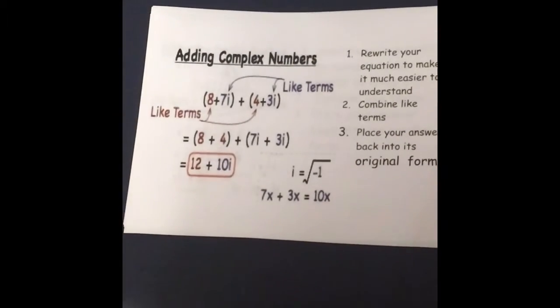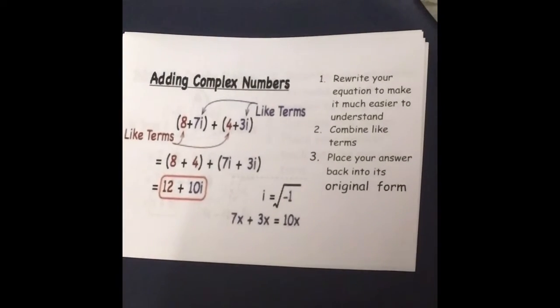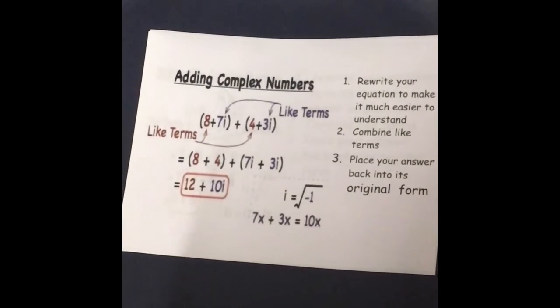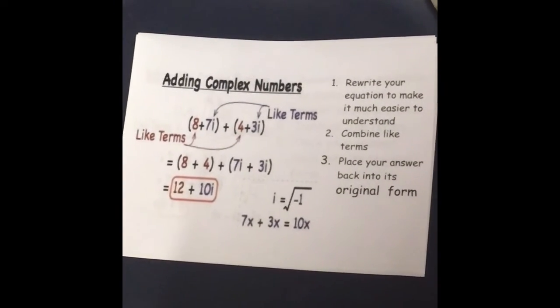Adding complex numbers. Step one: Rewrite your equation to make it easier to understand. Step two: Combine like terms. Step three: Place your answer back into the original form.